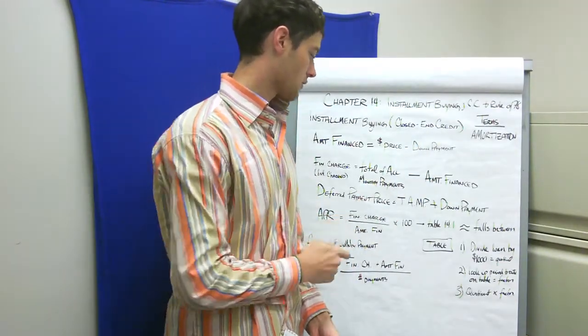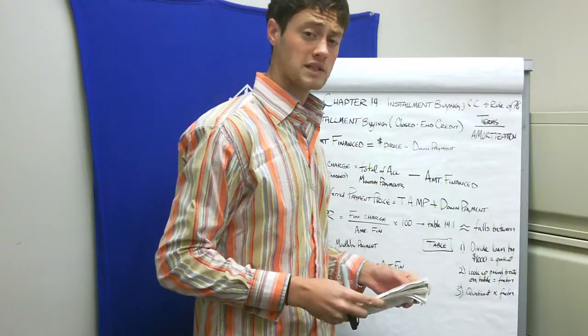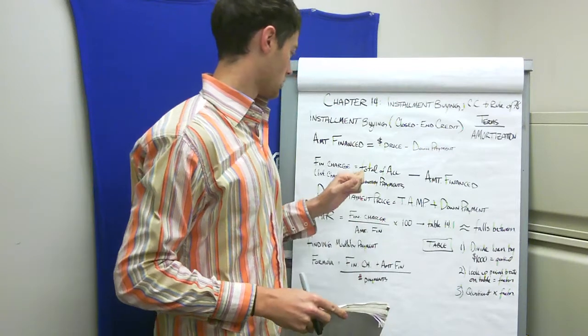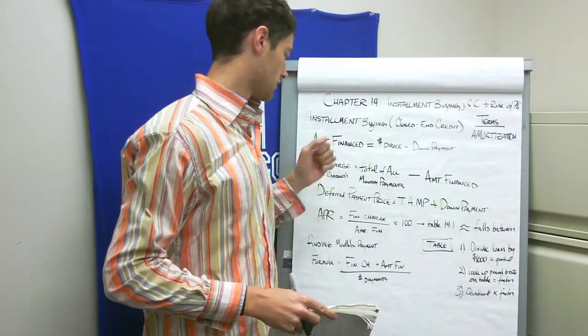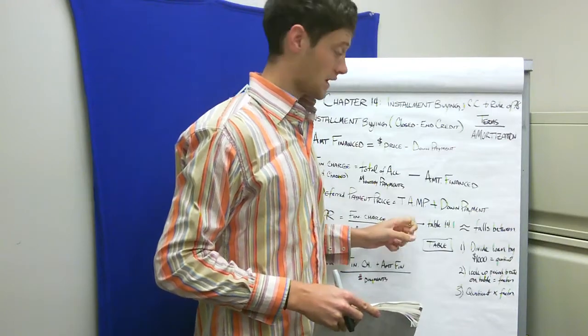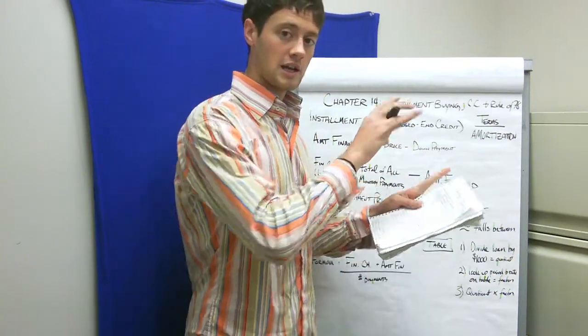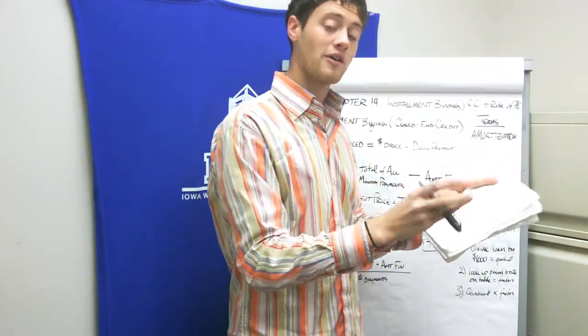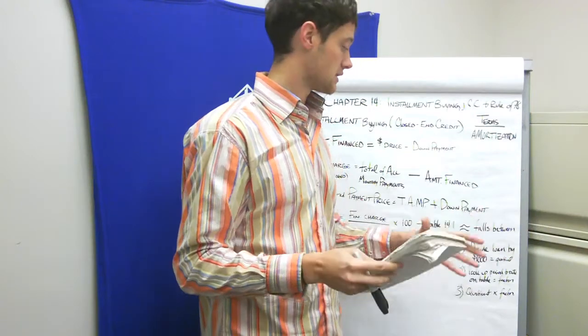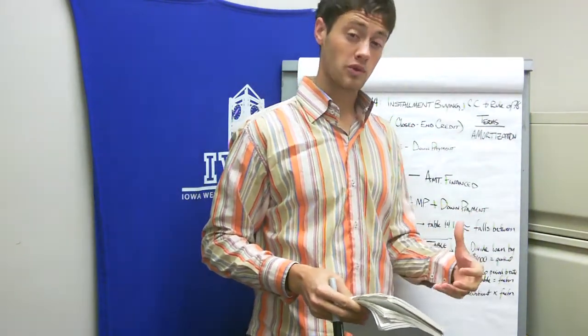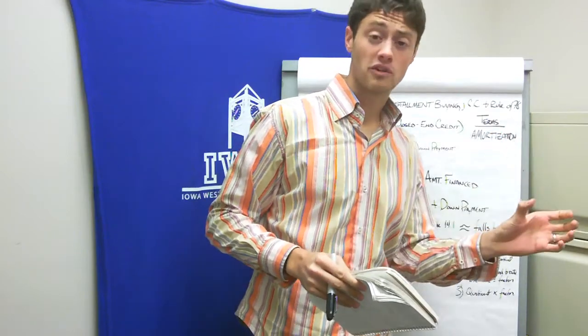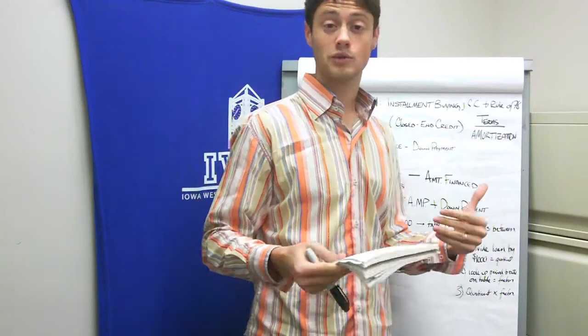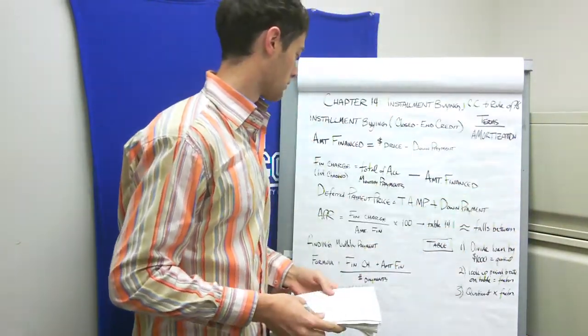Your deferred payment price is your total of all monthly payments plus your down payment. Then your APR, which is table 14.1. How you figure that out is you take your finance charge divided by amount financed, multiply by 100, and then look that up in the table. If we know our period is 60 months, we go over until we find where our number falls into. The government said it should always be within a quarter of a percent, between 10.5 and 10.75 or 14.5 and 14.75.